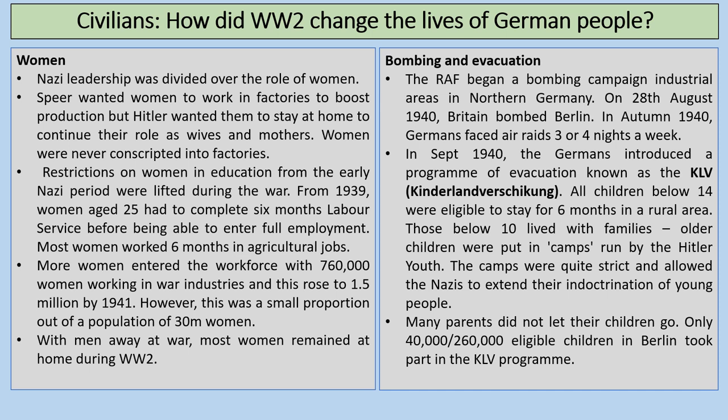How did World War II change the lives of German people in terms of women? The Nazi leadership was divided over the role of women. Albert Speer wanted women to work in factories to boost production, but Hitler wanted them to stay at home as wives and mothers. Women were never conscripted into factories in Germany. Restrictions on women in education from the early Nazi period were lifted during the war. From 1939, women aged 25 had to complete six months' labour service. More women entered the workforce, with 760,000 women working in war industries, rising to 1.5 million by 1941, though this was a small proportion out of a population of 30 million women.